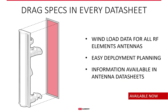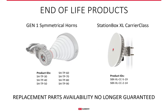We have added wind load data to all our antenna data sheets for two views — front and side — so if your WISP is located in an area with heavy winds, you'll appreciate this when planning deployments. From now on, we can no longer guarantee replacement parts for all first generation symmetrical horns and the StationBox XLCC. However, you can always find their data sheets and other information on our webpage in the discontinued product section.